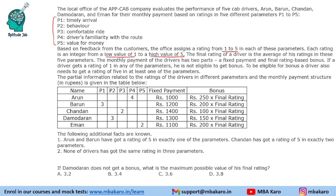The final rating of a driver is the average of the office ratings in these 5 parameters. The monthly payment of a driver has 2 parts: a fixed payment and a final rating-based bonus. If a driver gets a rating of 1 in any of the parameters, he is not eligible to get a bonus — if you get a 1, that means no bonus.